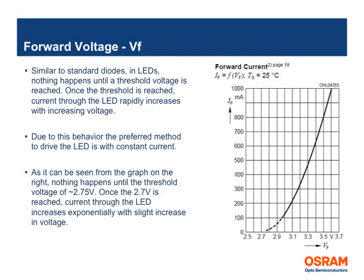One key parameter is the forward voltage of an LED. Similar to standard diodes, nothing happens in an LED until the threshold voltage of approximately 2.5V is applied across the LED. Once the threshold is reached, current through the LED increases exponentially with increase in voltage. This behavior requires the LED to be better driven with a constant current than a fixed voltage.